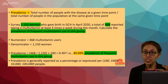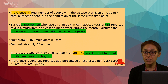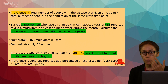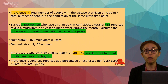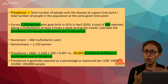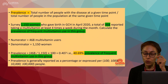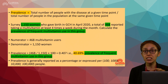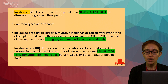Prevalence is generally reported as a percentage, as in this example. It can also be expressed in research papers as per 100, per 1,000, per 10,000, or per 100,000 people. This helps you understand statements in research papers — prevalence means the population already has the disease condition of interest.